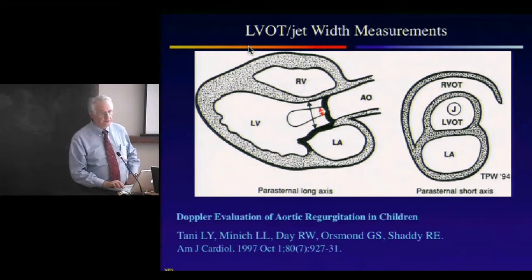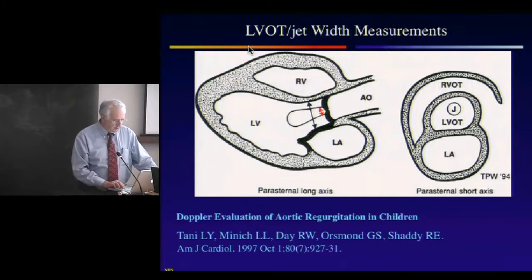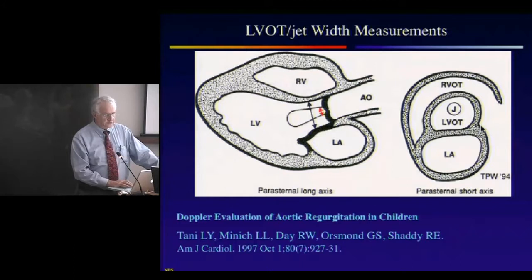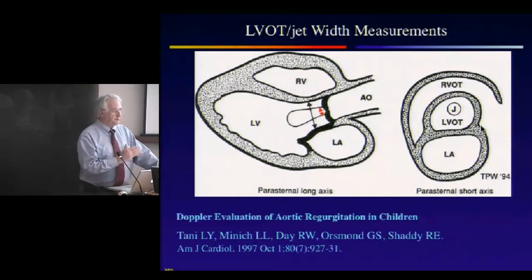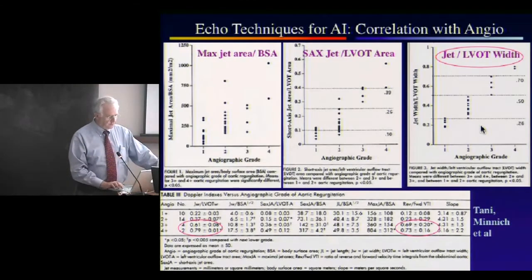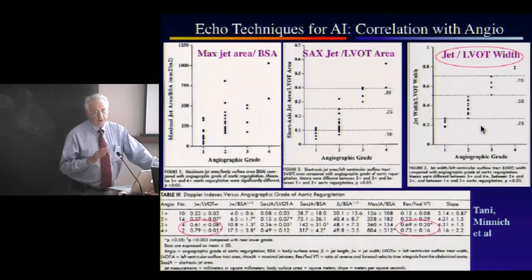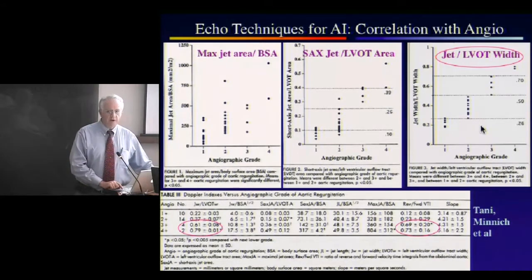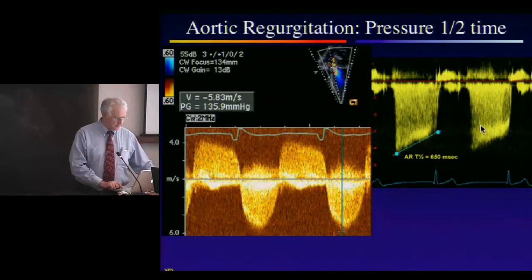For aortic insufficiency, a study by Lloyd Taney and Luann Minnick from the Pediatric Heart Network found the most reliable way to calculate its degree was to measure the jet width against the diameter of the aortic outflow: over 40% is severe, under 20% is mild, and the middle group is moderate regurgitation. Retrograde abdominal flow also worked well, reflecting the severity of aortic insufficiency.